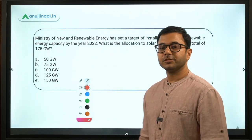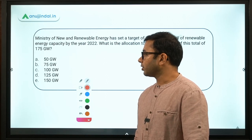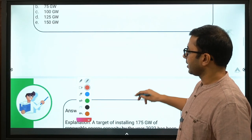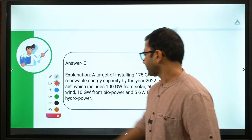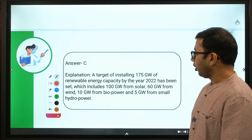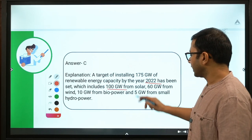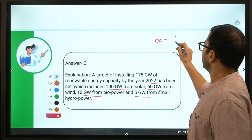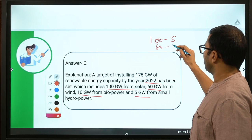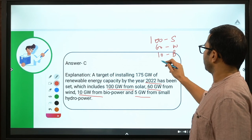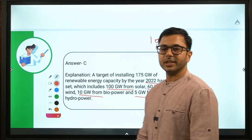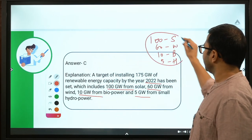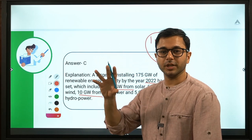The options are 50 Gigawatt, 75 Gigawatt, 100 Gigawatt, 125 Gigawatt, and 150 Gigawatt. The answer is option C, which is 100 Gigawatt. The allocation is: a target of 175 Gigawatt of renewable energy capacity by 2022, which includes 100 GW from solar, 60 from wind, 10 from bio, and 5 from hydro. The acronym SWBH can help you remember this — Solar, Wind, Bio, Hydro — so you can visualize it at the end of the examination.